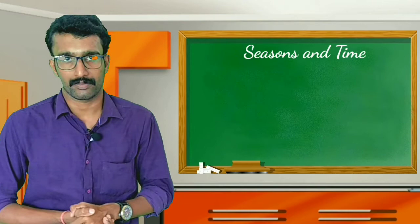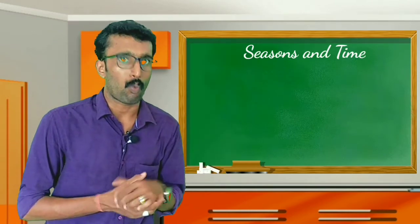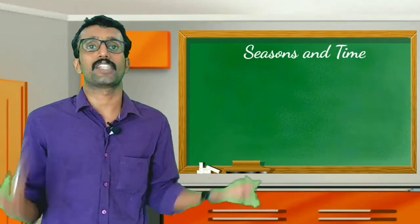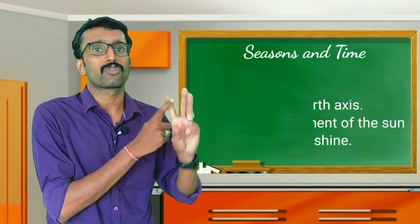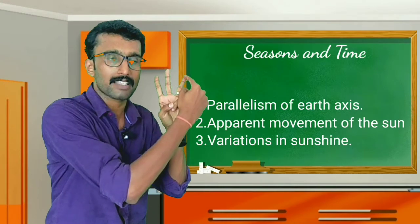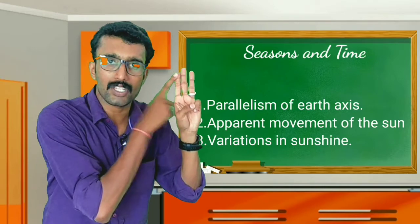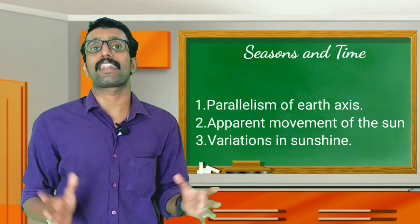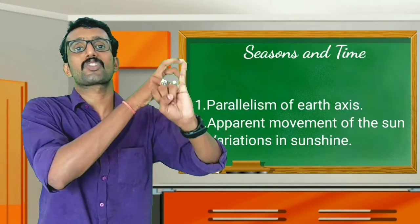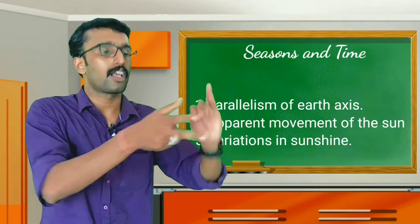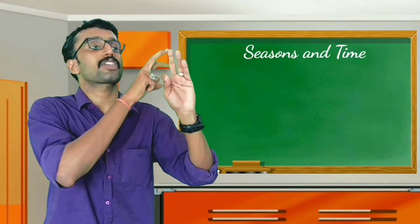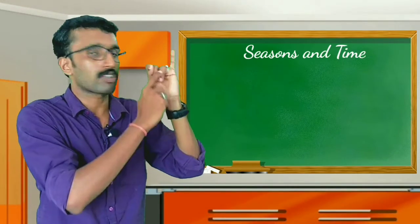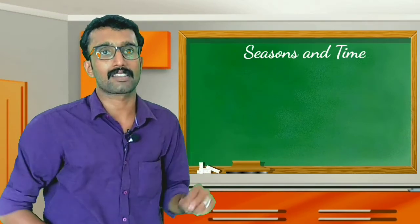Due to the apparent movement of the sun, variations in sunlight are experienced. Due to the variations in sunlight, different seasons are experienced. So the answer is very simple — three factors are influencing: one is the parallelism of the Earth's axis, second one is the apparent movement of the sun, and third one is the variations in sunlight. The variations in sunlight is the basic factor; the apparent movement of the sun is its reason; and the parallelism of the Earth's axis is the reason for the apparent movement of the sun.